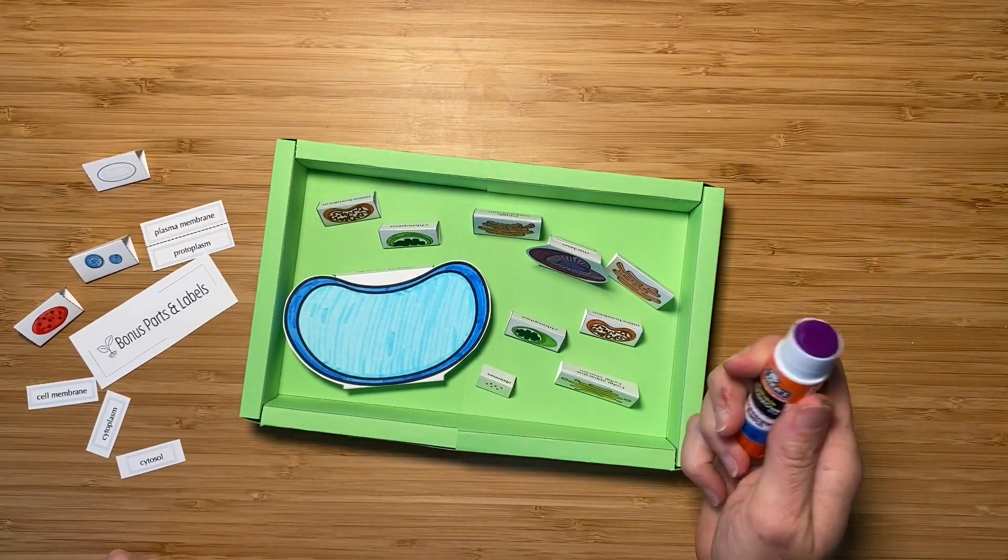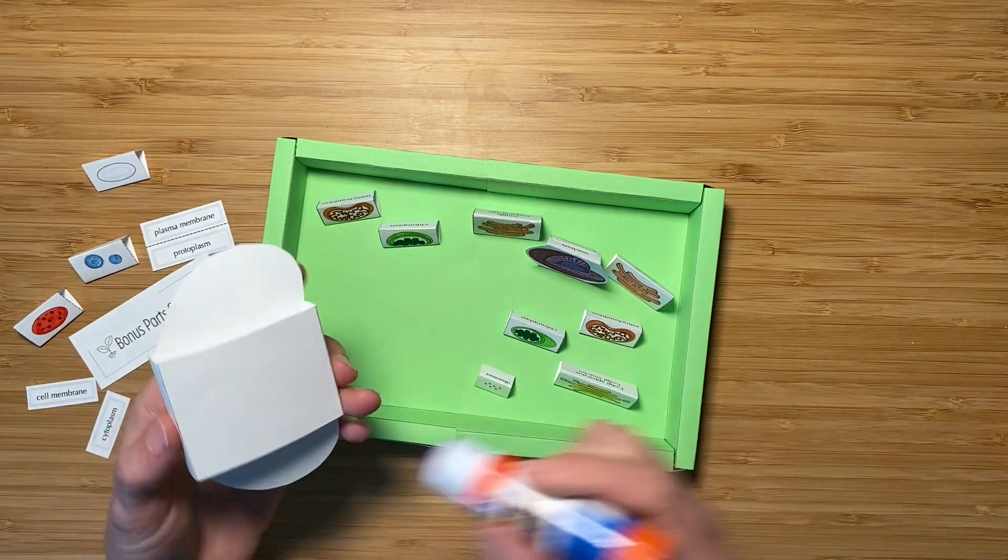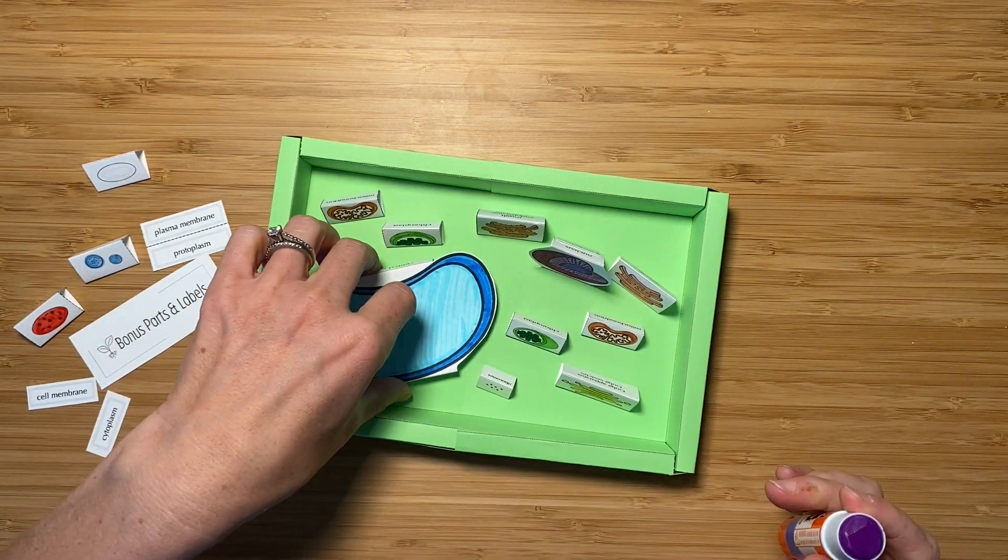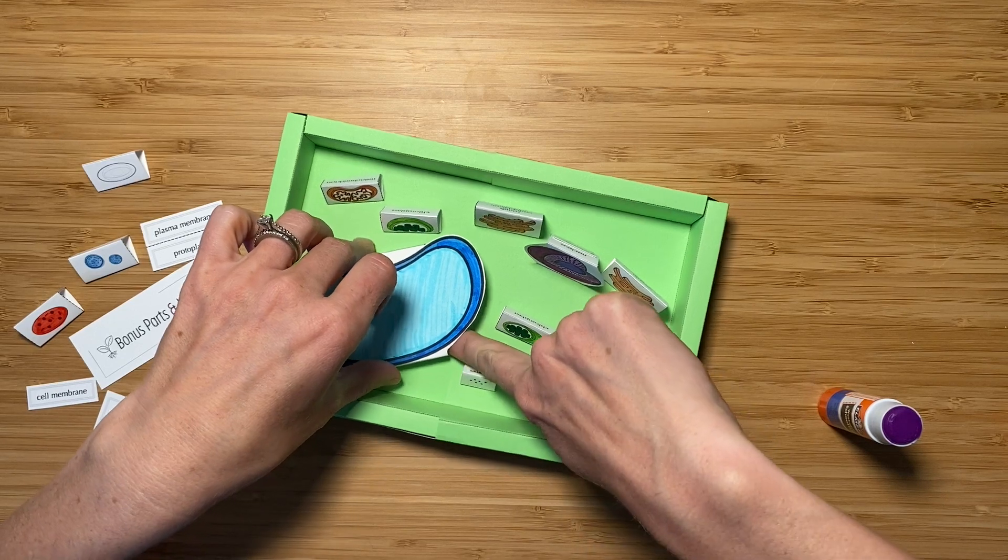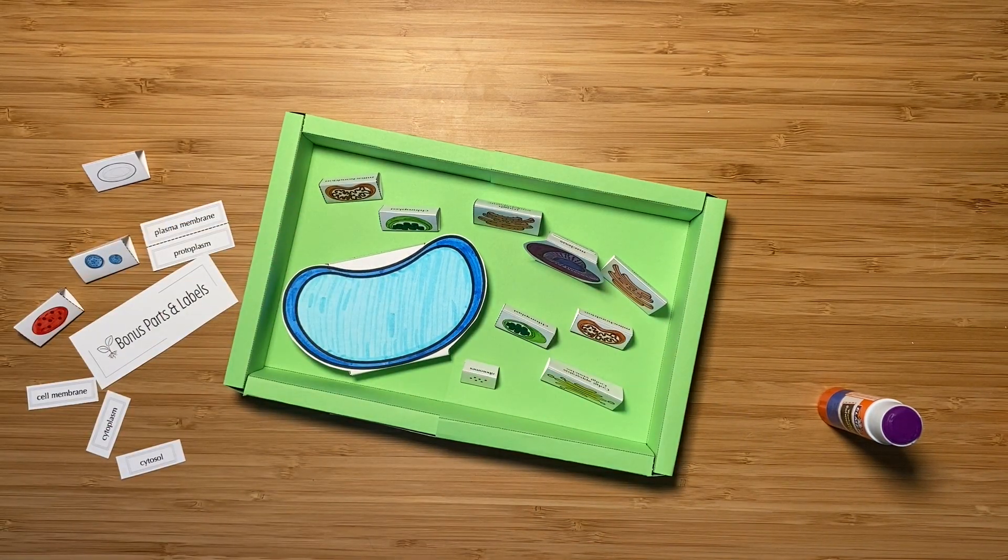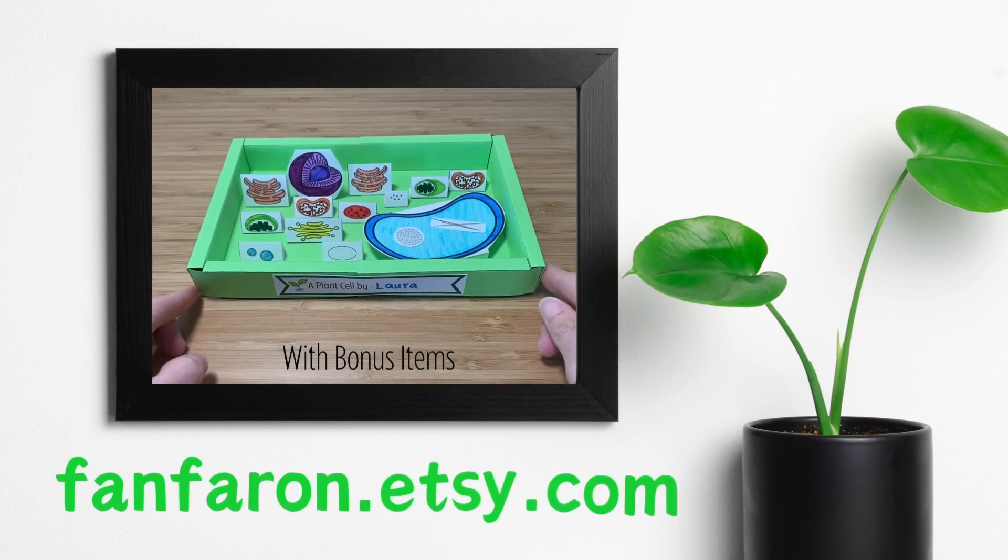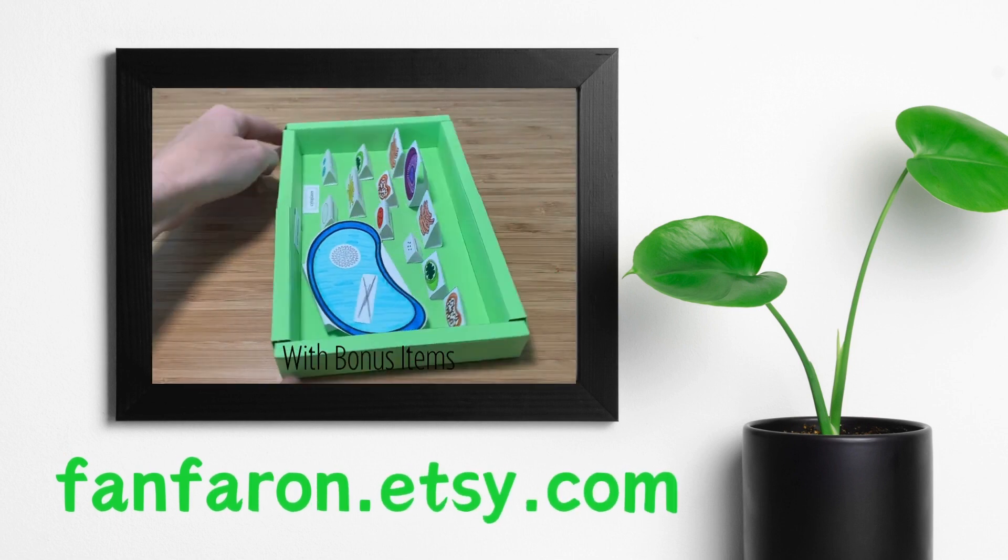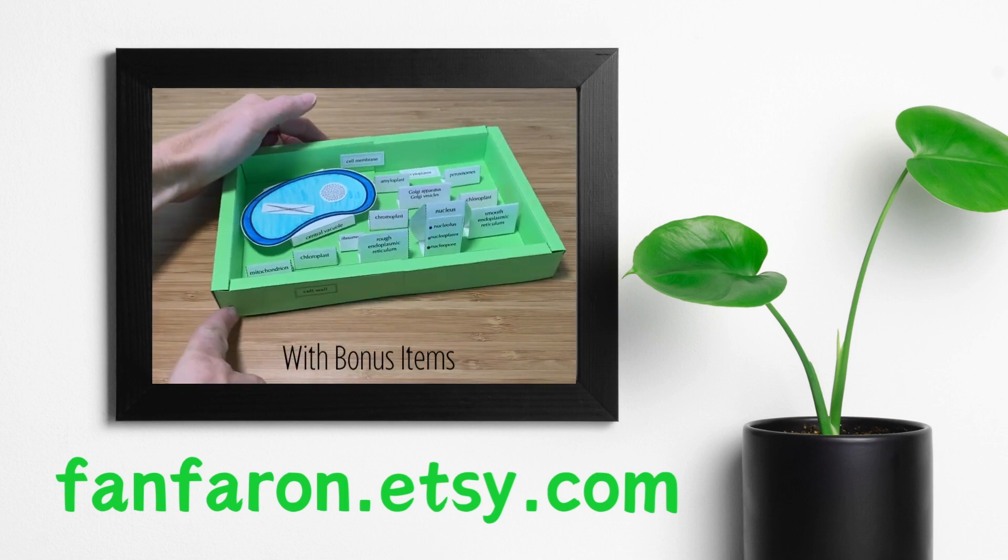When you are ready, grab your glue stick, put glue on the base of each part of the cell, and secure it into the cell wall. Remember to add in any extra labels that you might want to use. You're all done. Thanks for watching. If you're being graded, I hope you get an A-plus on your project.